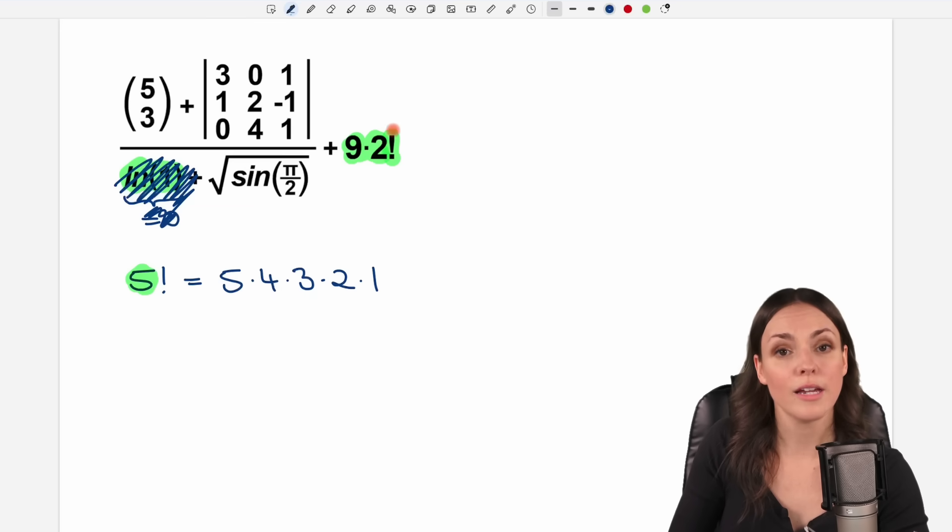In our case, we only have 2 factorial. So this means we start at this number, the 2, and we multiply it by the next smaller number, by the 1. 2 times 1 equals 2. So 2 factorial is just equal to 2. So in total here, we have 9 times 2, which equals 18.